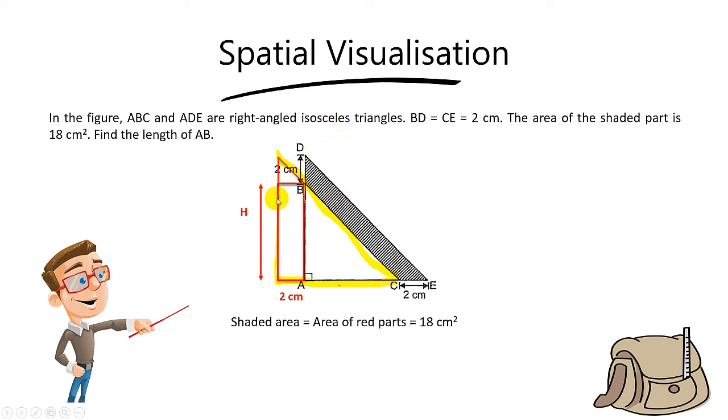Now we know the area of this red colored part is 18cm². In order to find the length of AB, we need to take 18cm² minus the area of the top triangle.